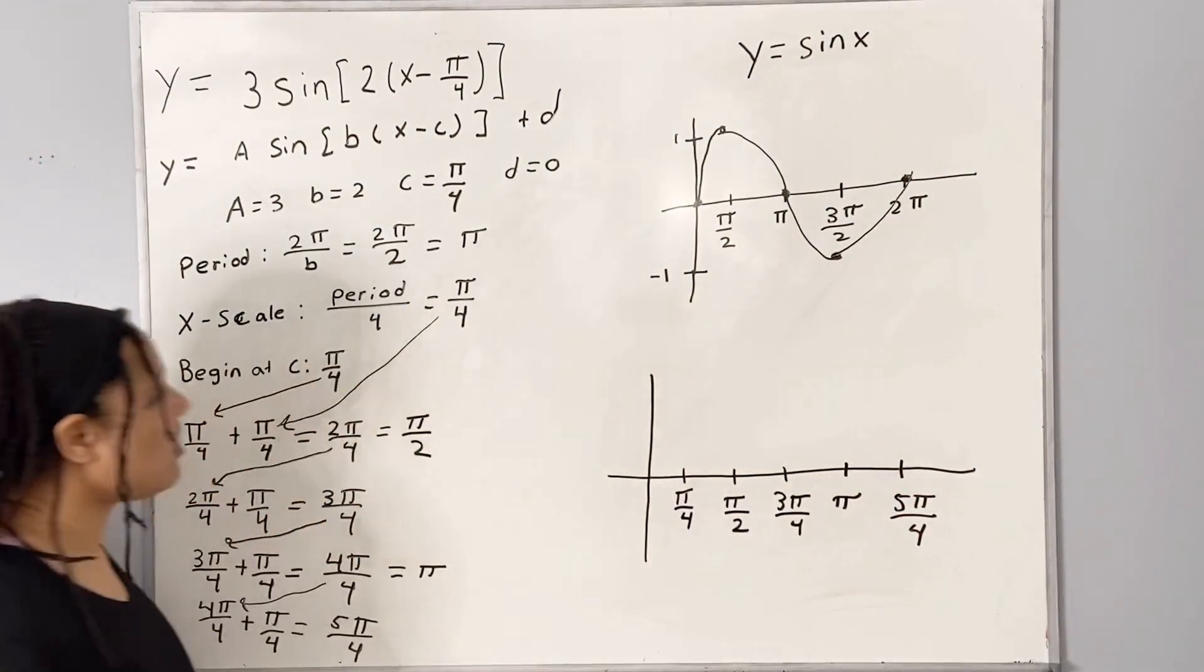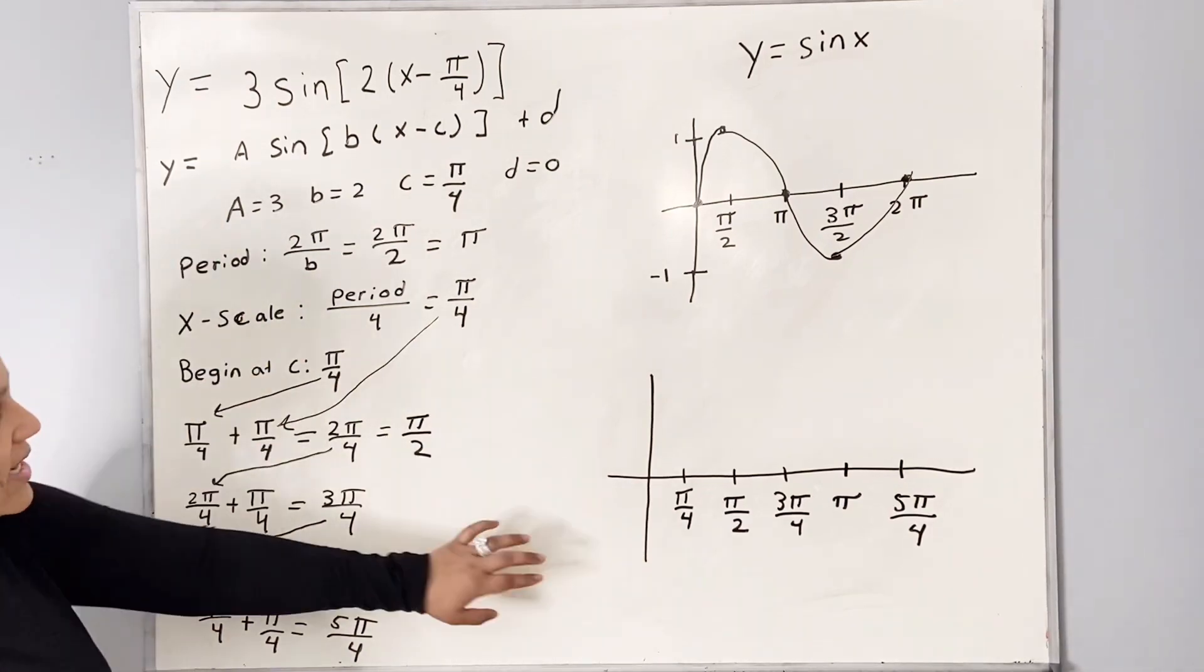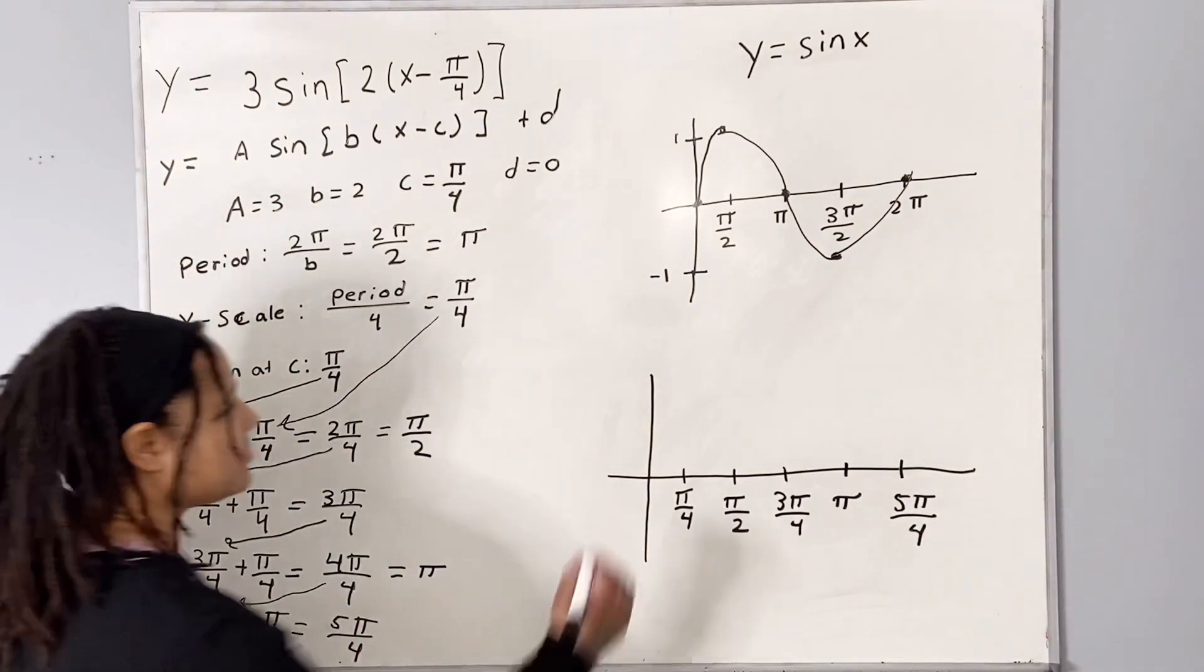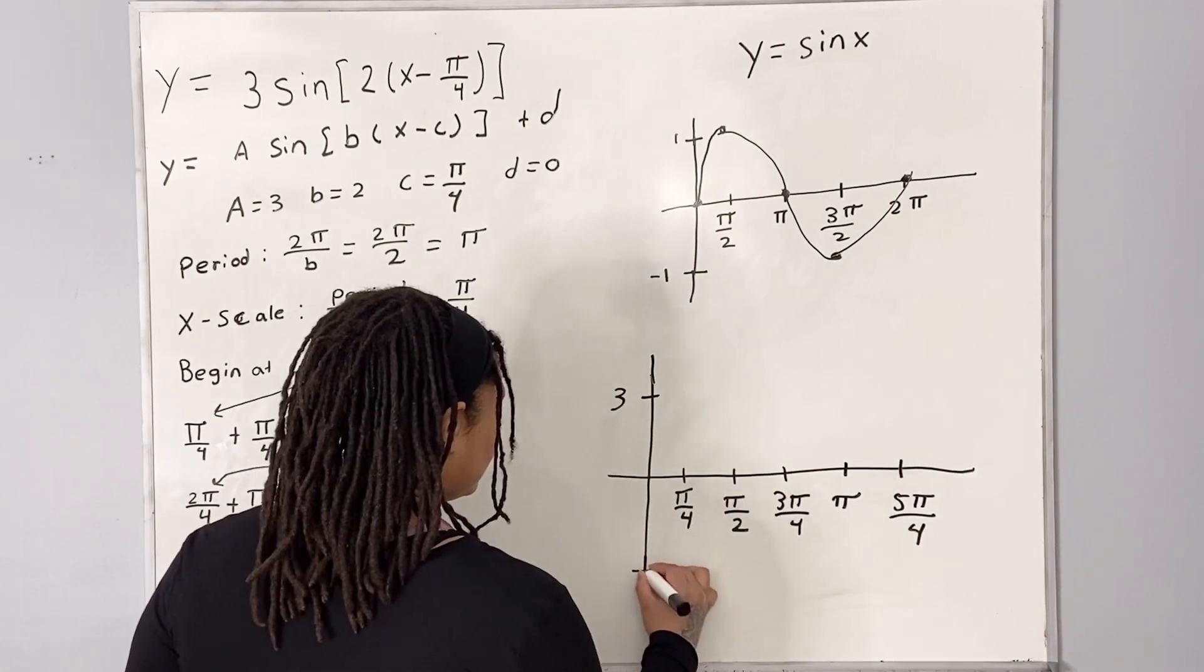And remember our new high is going to be a high of 3 and a low of negative 3. So we're going to go 3 and negative 3.